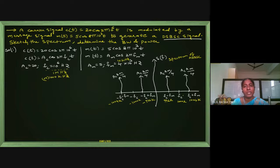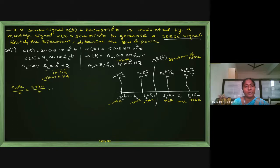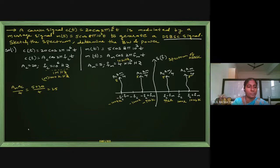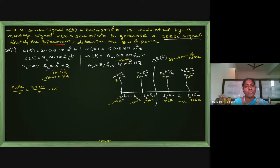Now calculating the pillar heights: Ac·Am/4 = 20×5/4 = 100/4 = 25... the height is 5 volts. All four pillars have a height of 5 volts. This completes sketching the DSB-SC spectrum.